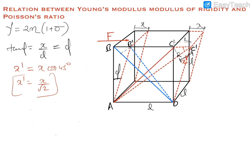So x dash equals x by root 2. Similarly, for the other diagonal, x dash again equals x cos 45°. The strain produced in AC will be the change in its length divided by its original length. The original length of AC is root 2L, so strain in AC equals x dash upon root 2L, which simplifies to x upon 2L.